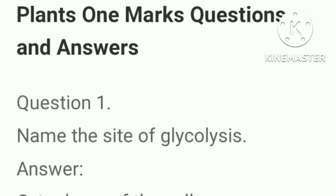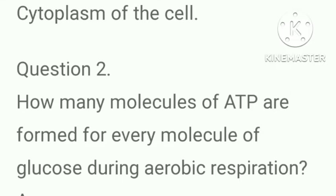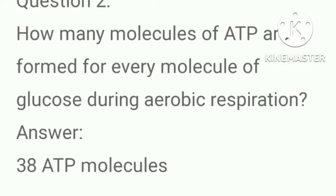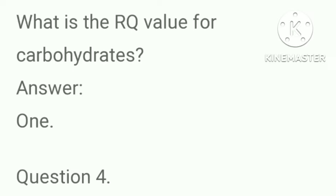First, one mark questions and answers. Name the site of glycolysis — answer: cytoplasm of the cell. How many molecules of ATP are formed for every molecule of glucose during aerobic respiration? Answer: 38 ATP molecules. What is the RQ value for carbohydrates? Answer: 1.